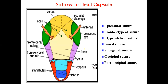The epicranial suture is also called the ecdysial cleavage line. It forms an inverted Y-shape. This epicranial suture has two arms, which are called the frontal sutures.